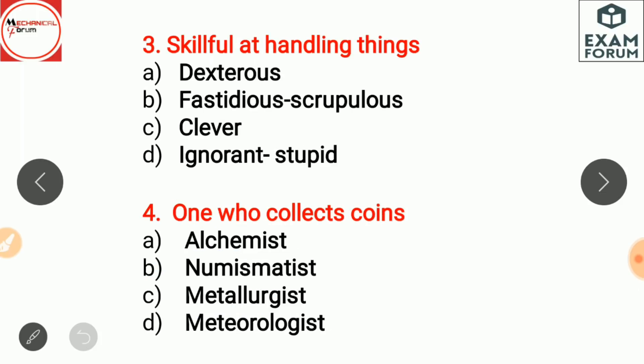Skillful at handling things is dexterous. Fastidious is a person who wants everything to be perfect — it also means scrupulous. These two are synonyms. Clever means a person who is able to learn quickly and is very intelligent. Ignorant means stupid or foolish.